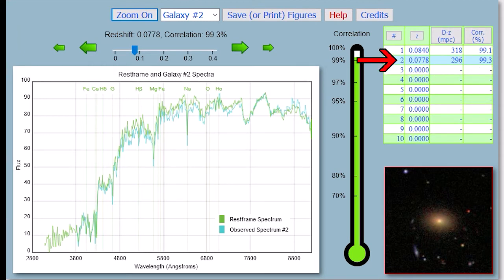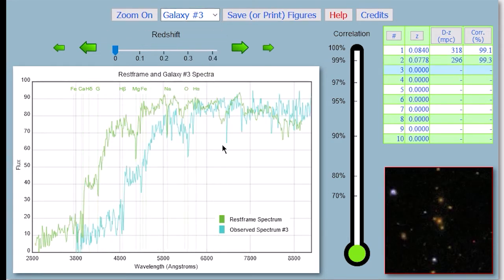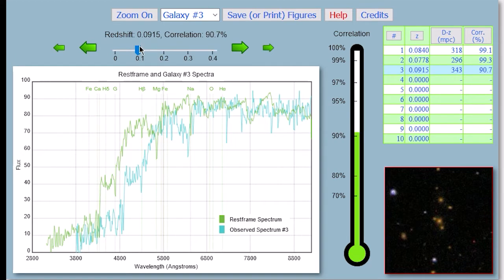Now this data table, you're also going to want to copy into your lab notebook. So the lab manual suggests how to set up your table, and then you would copy all of this data into that table. So after you get the correlation as high as possible for every galaxy, write down your data, and then you can switch to the next galaxy, and again, work on matching up those two spectrums.